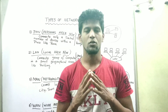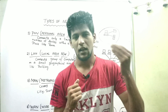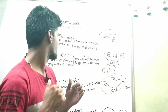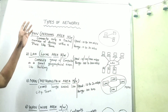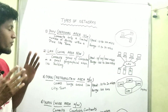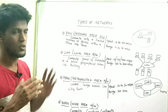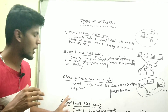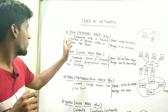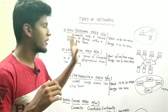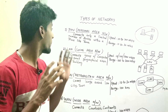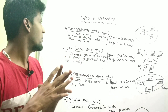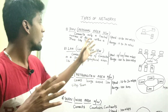In the previous video, we gave an introduction and talked about the clarification. There are 4 types of networks: 1. PAN, 2. LAN, 3. MAN, 4. WAN — that is, Personal Area Network, Local Area Network, Metropolitan Area Network, and Wide Area Network.